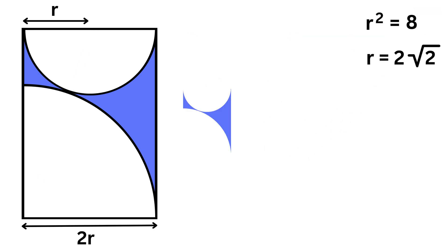Now the area of this shaded region will be the same as the area of this rectangle minus the area of this semicircle minus the area of this quarter circle.